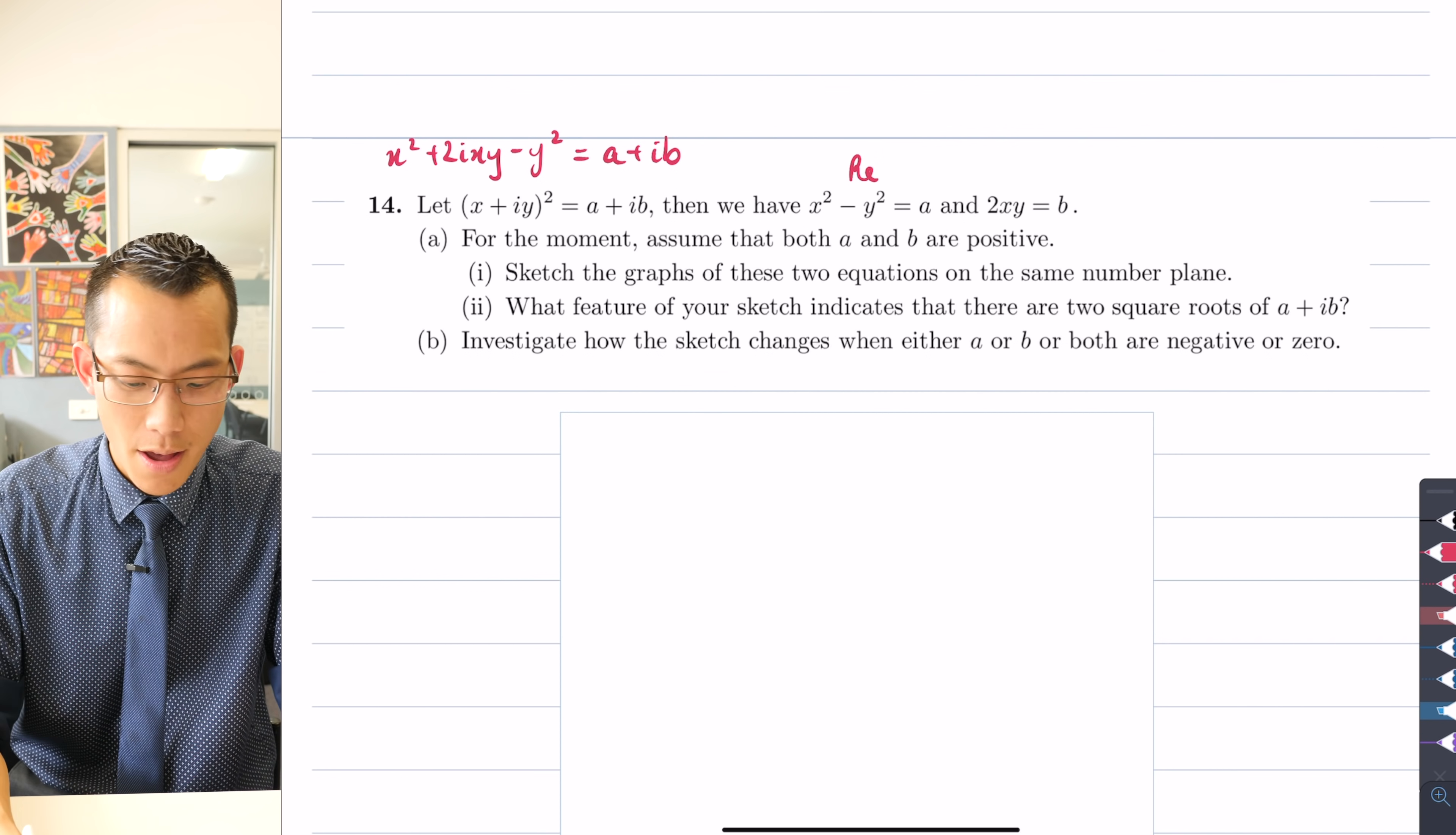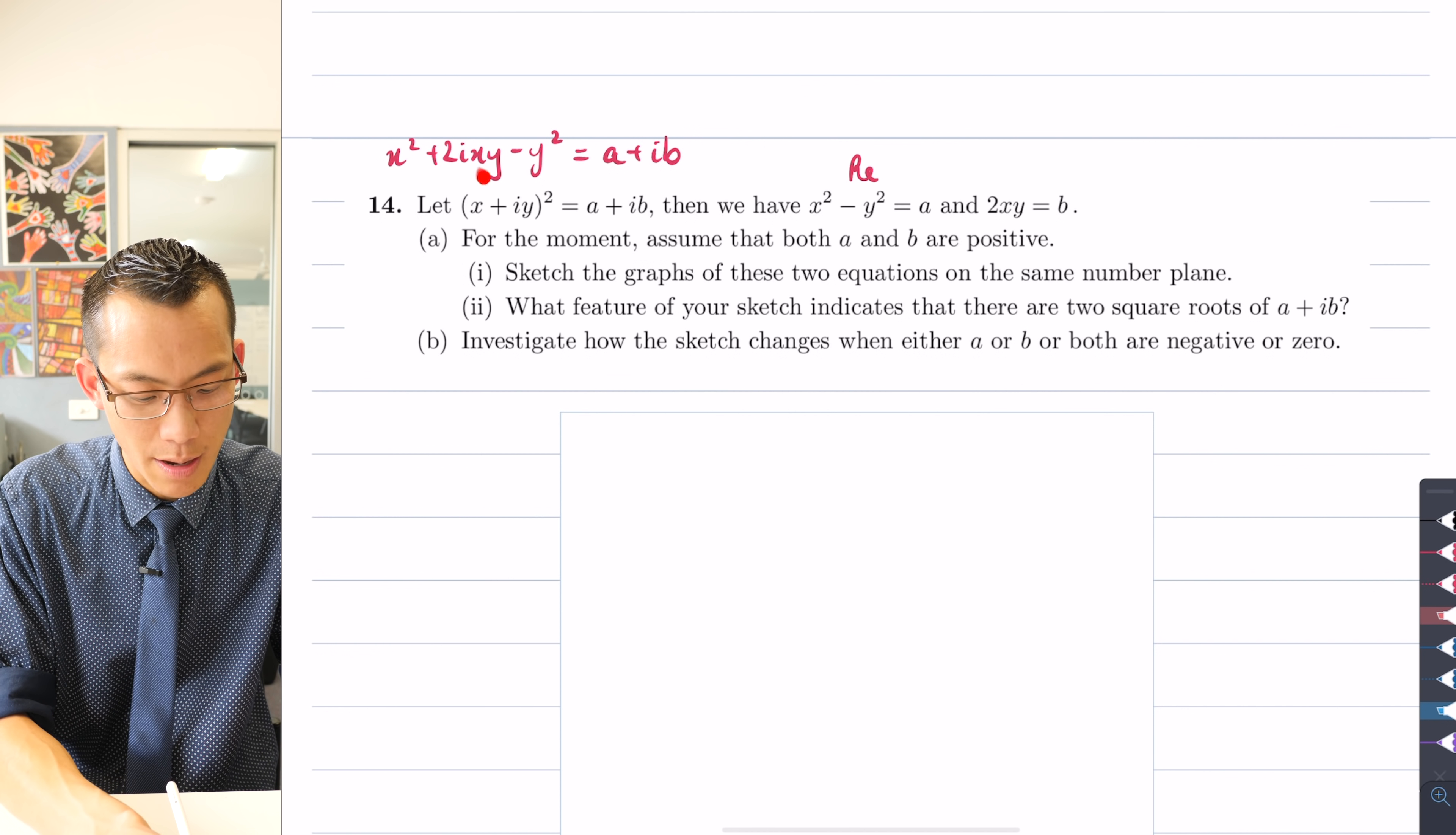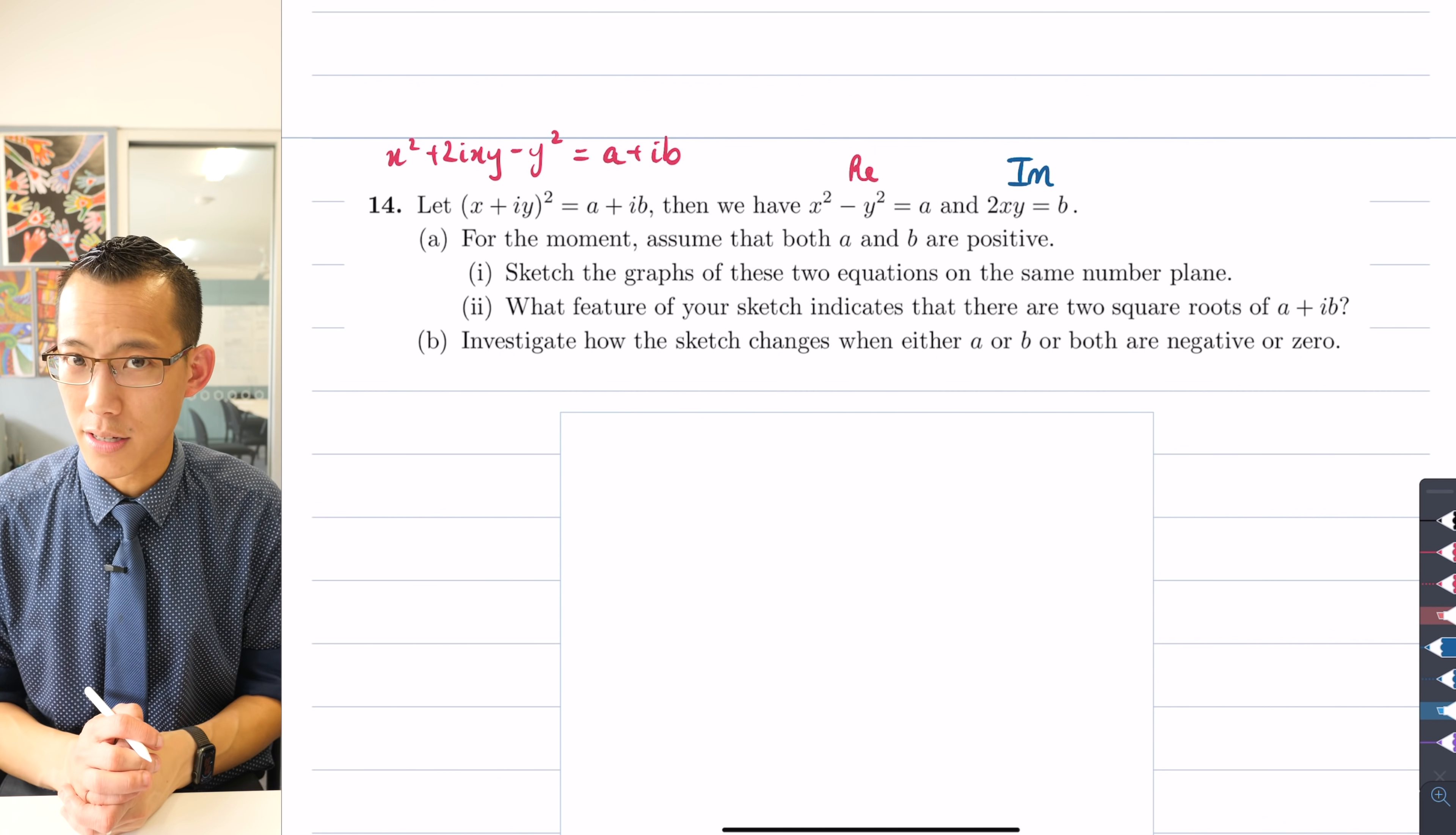Whereas the 2ixy, that's imaginary just like ib is imaginary. So when you compare the imaginary parts, 2 times x times y equals b. This is what we get from the imaginary side, so that's how you get these two simultaneous equations.